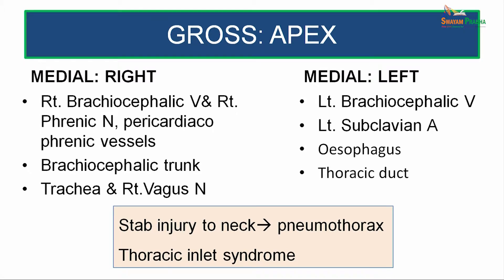The medial relations differ slightly for the right and left sides. On the right side we have the right brachiocephalic vein along with the right phrenic nerve and pericardiacophrenic vessels, followed by the brachiocephalic trunk, then the trachea and the right vagus nerve. On the left side, we have the left brachiocephalic vein and left subclavian vein, which replace the brachiocephalic trunk, and posterior to that the esophagus and the thoracic duct.